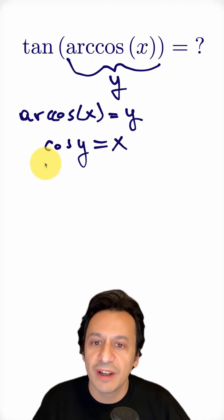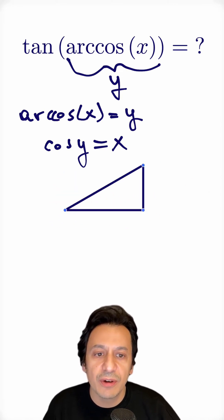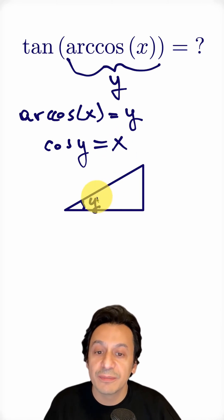Now, let's draw a triangle where the cosine of y equals x. What does this mean? There will be an angle y whose cosine value is x, that is, the ratio of the adjacent side to the hypotenuse.